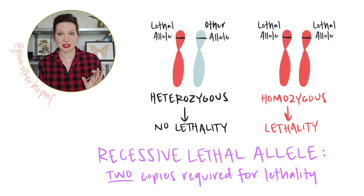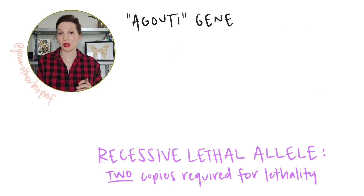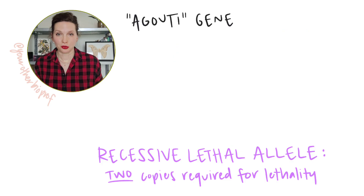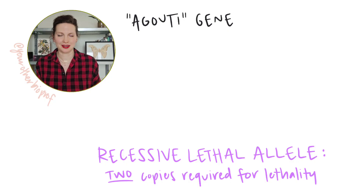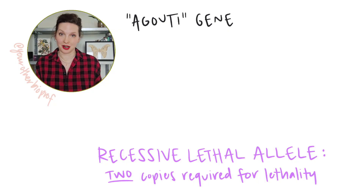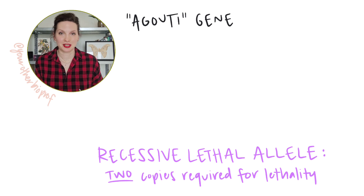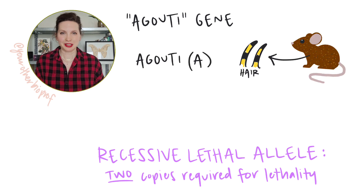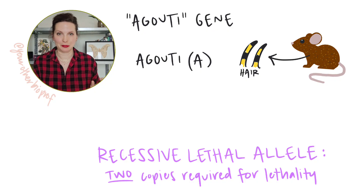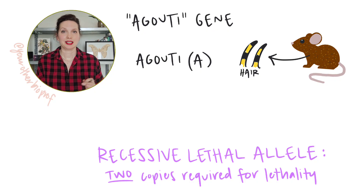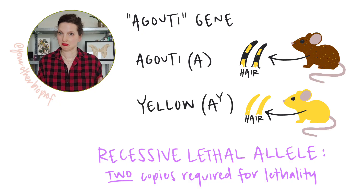The classic example of a recessive lethal allele comes from studies of mouse coat color with the agouti gene, which encodes a product involved in cell signaling and cellular communication — basically it determines which pigments are deposited in the hairs. There are many alleles for this gene, but two important ones are agouti, which leads to an almost alternating black and yellow pigment deposition in the hairs, and yellow, which is yellow.